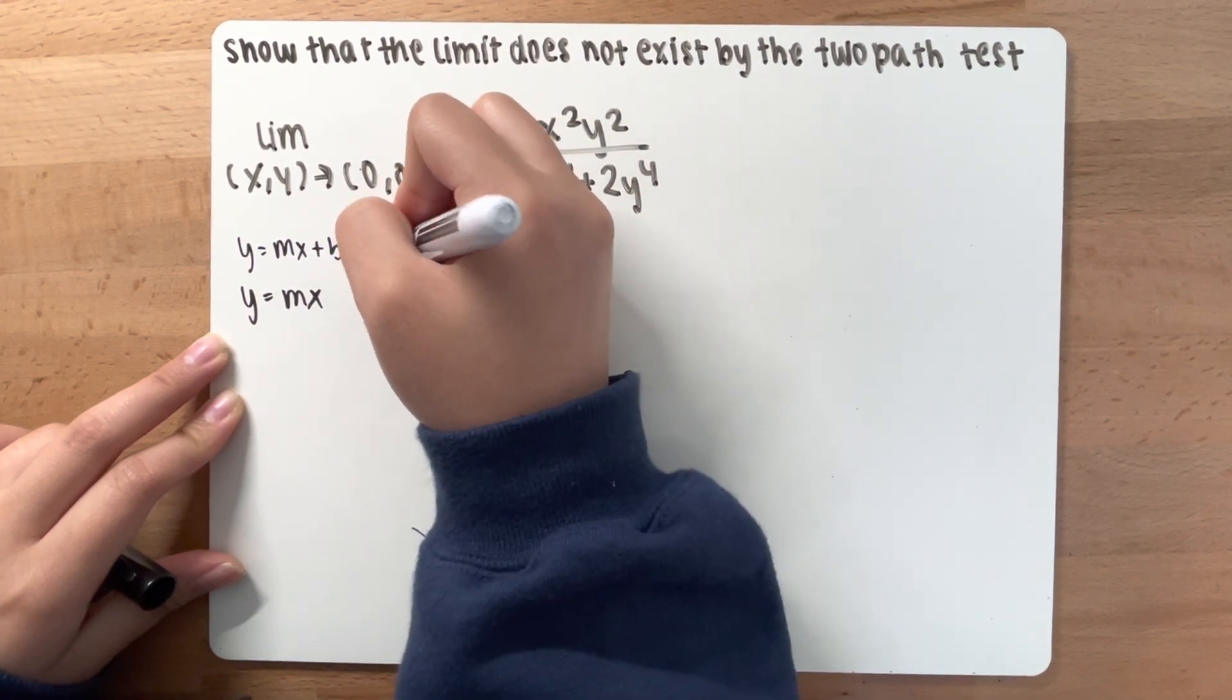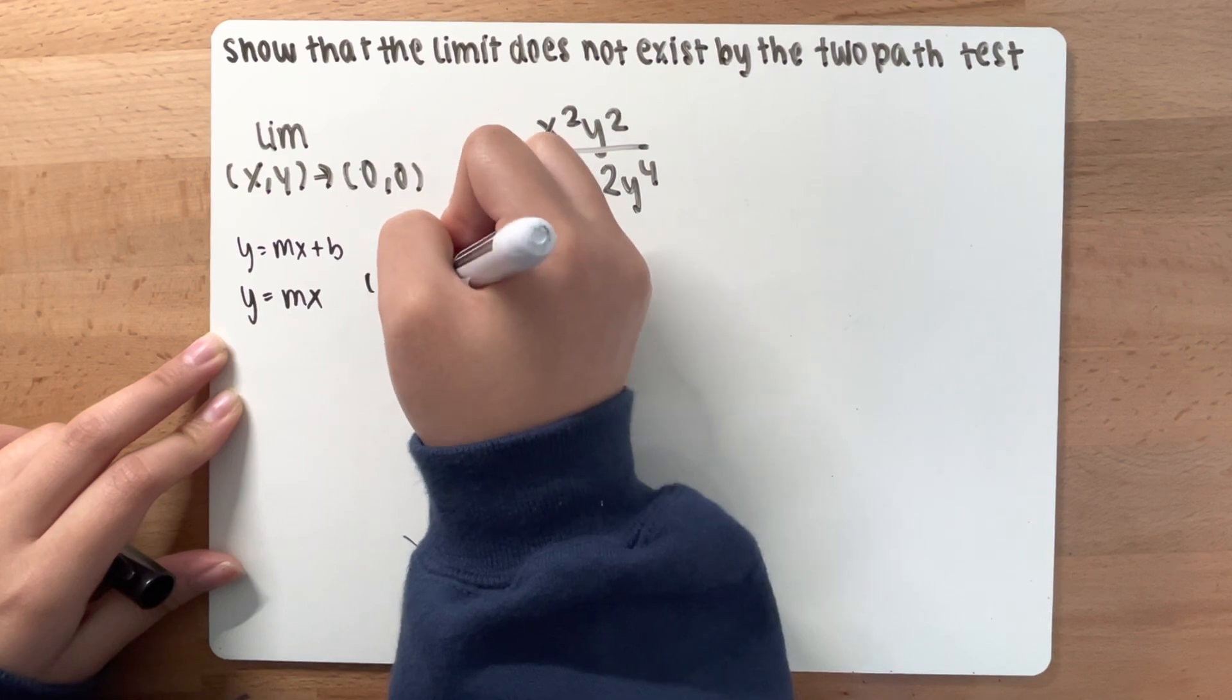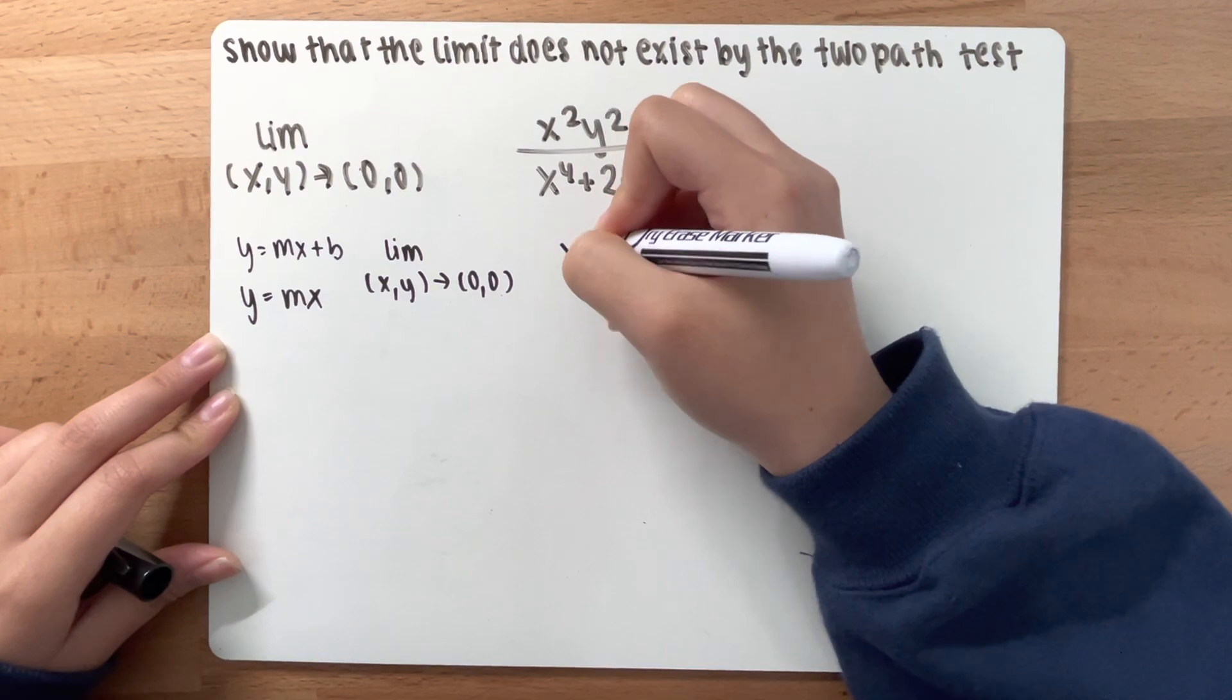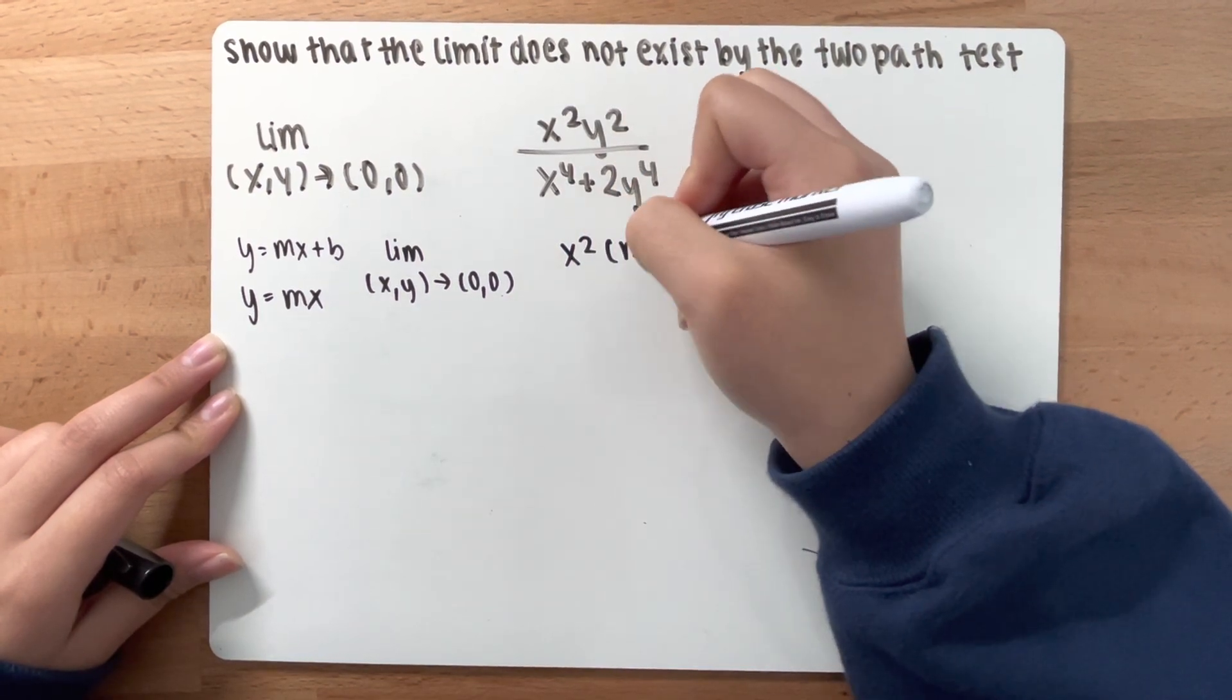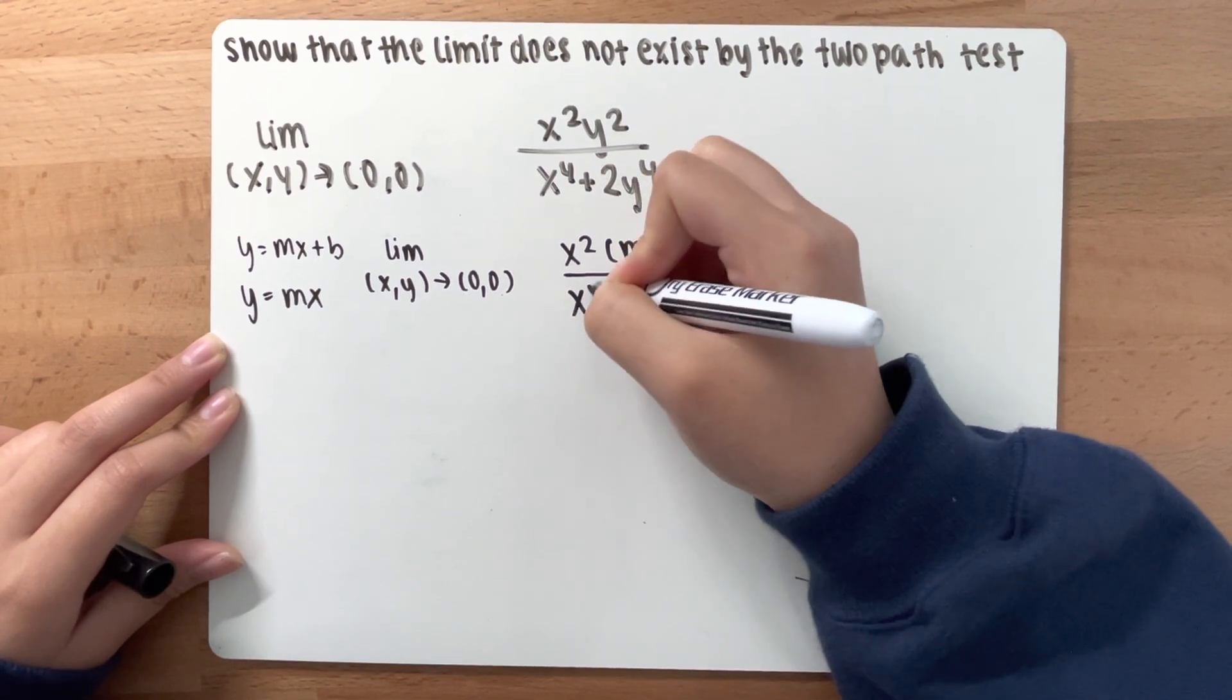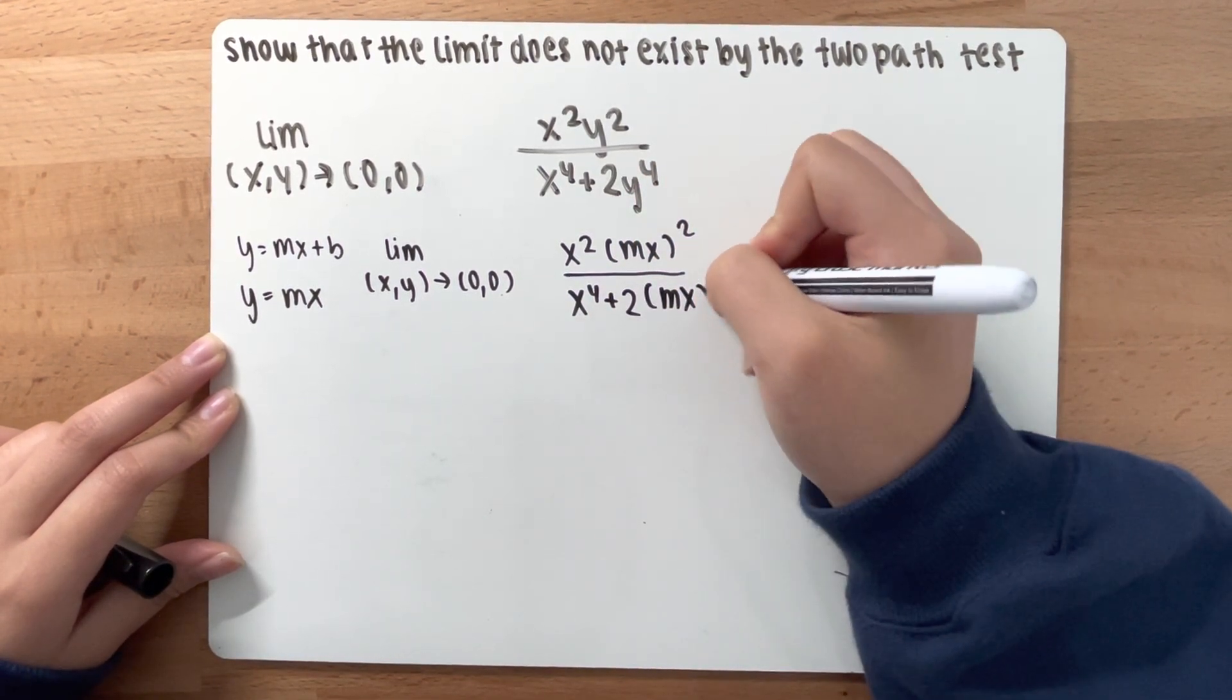So, lim as (x,y) approaches (0,0), you have x squared times mx squared over x to the fourth power plus 2 times mx to the fourth power.